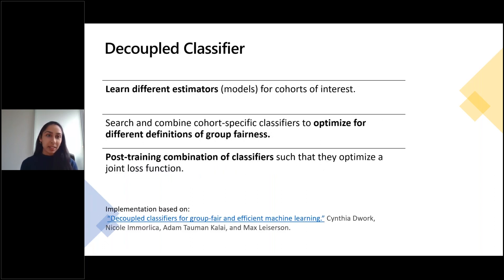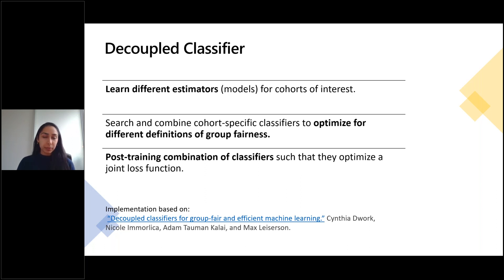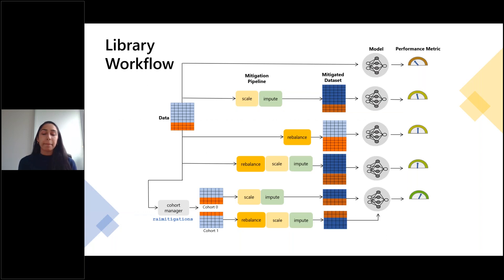The decoupled classifier is an implementation based on a paper by Cynthia Dwork, Nicole Morlica, Adam Nicoley, and Max Leiserson. It allows you to learn different estimators for cohorts of interest beyond what the cohort manager already does, and also enables certain post-training steps that combine different classifiers to optimize a joint loss function.